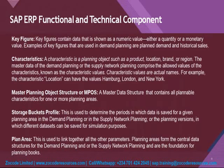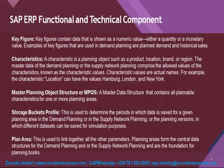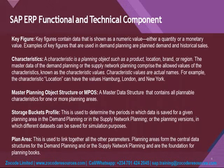The master data of Demand Planning or Supply Network Planning comprises the allowed values of characteristics, known as characteristic values. For example, the master data structure contains locations, which are categories of characteristics. Characteristics include location, brand, product, customer, and similar items. When doing forecasting, you are doing so based on these characteristics but judging them using the key figures.